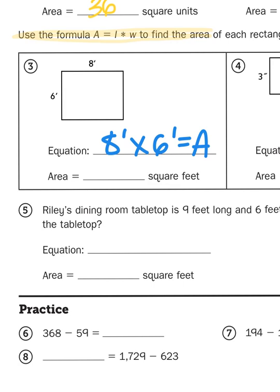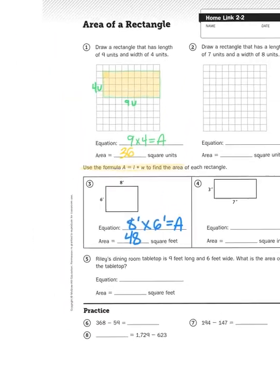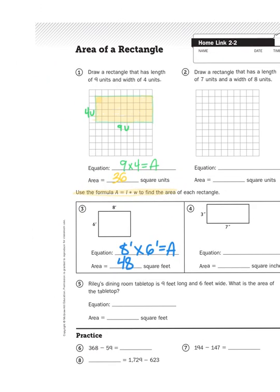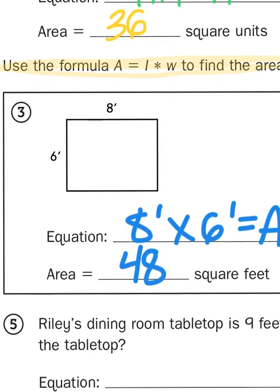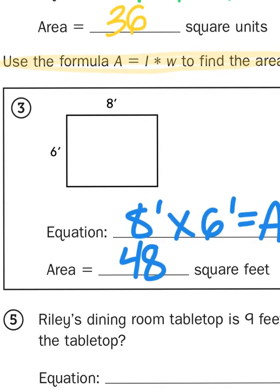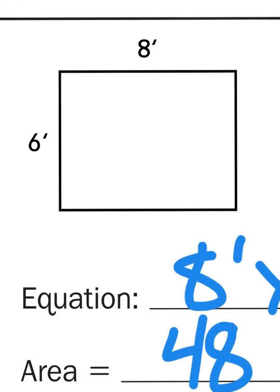So eight times six is going to give me 48 square feet. Now the only difference between problem number one and problem number three is that there's no grid of squares to help you illustrate or picture all the little square feet that live on the inside.